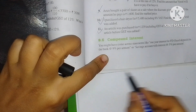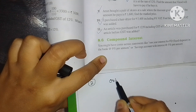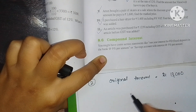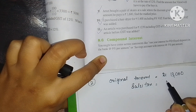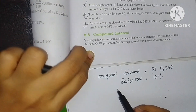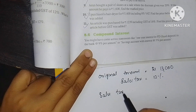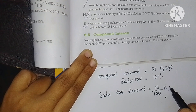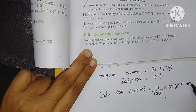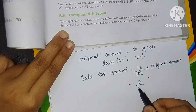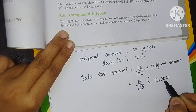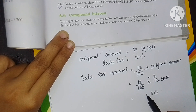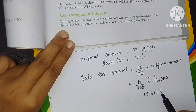For the second question, the original amount is rupees 13000 and the sales tax percent is 12%. The sales tax amount equals 12 by 100 into 13000. Two zeros cancel, giving 12 into 130, which equals rupees 1560. So rupees 1560 is the sales tax.